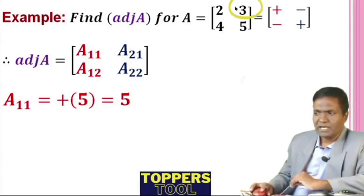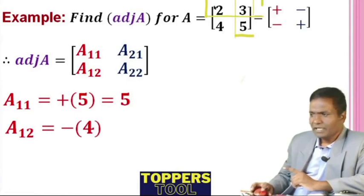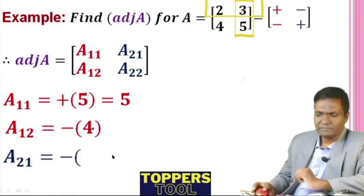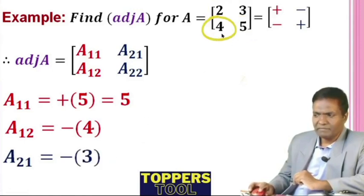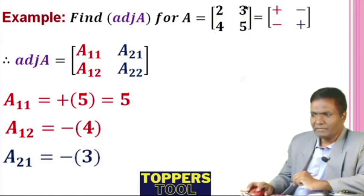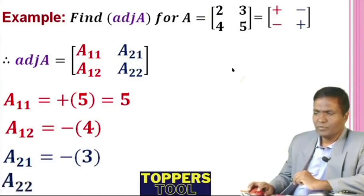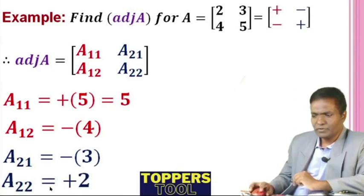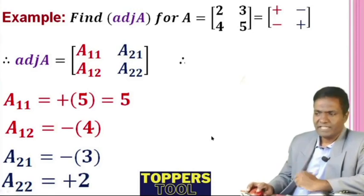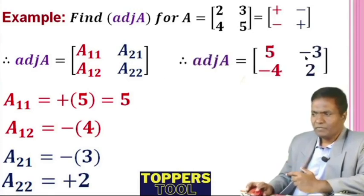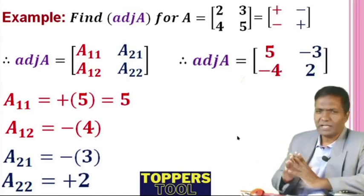A21 is the cofactor — it is minus, so minus into the remaining element, that is 3. So A21 is minus 3. After finding all cofactors and taking the transpose, this is your adjoint of A.